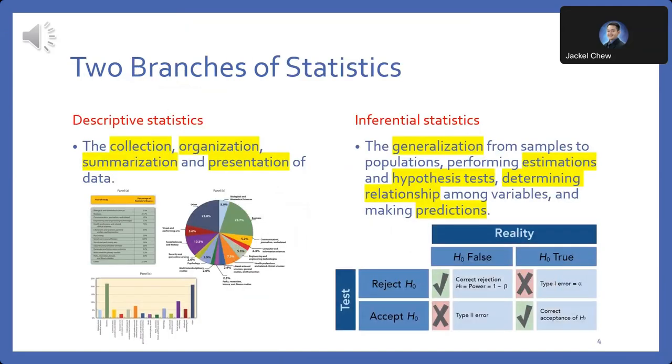Generally, there are two fundamental branches of statistics: descriptive and inferential statistics. Descriptive statistics involve the collection, organization, summarization, and presentation of data. It provides us with a comprehensive understanding of the characteristics of a dataset, including measures of central tendency, dispersion, and graphical representations.